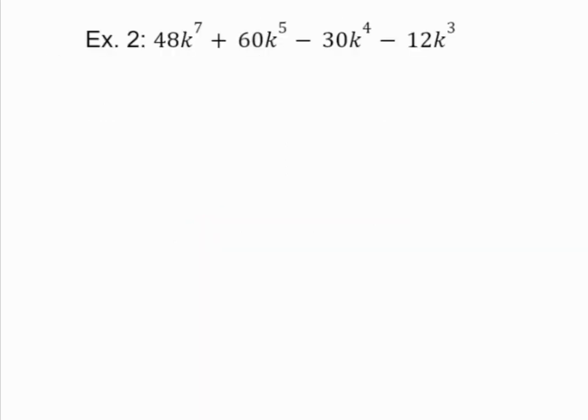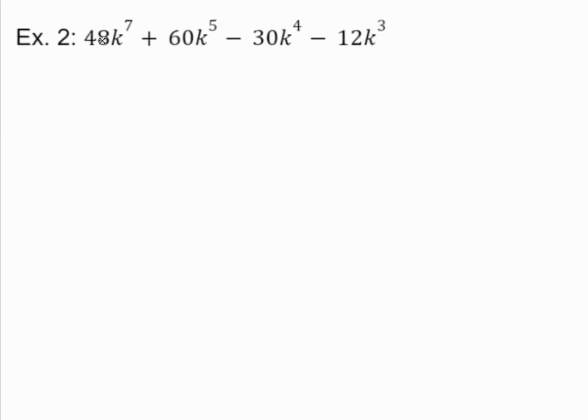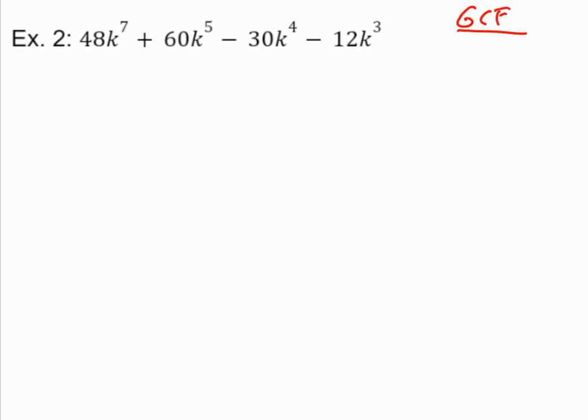Let's take a look at another example. So here in example 2, I've got this expression. I'm going to start by finding my GCF. So I've got 48, 60, negative 30, and negative 12. The GCF of those, I'm not going to write out all their factors. The GCF of those four things is 6. These all have a k, so I know I'm going to have a k in my GCF. And I just take whatever my smallest exponent is. So in this case, k cubed. So I'm going to divide all of these things by 6k cubed.